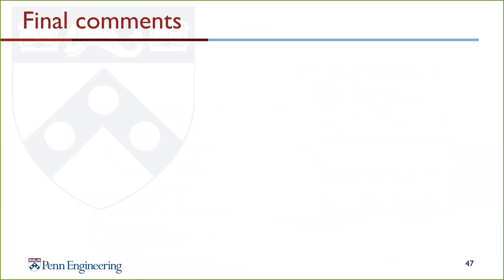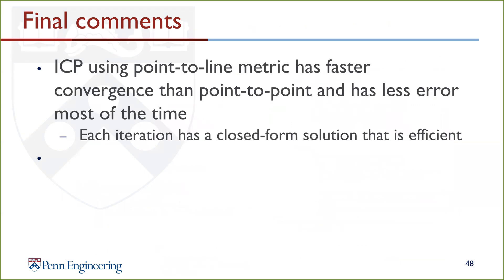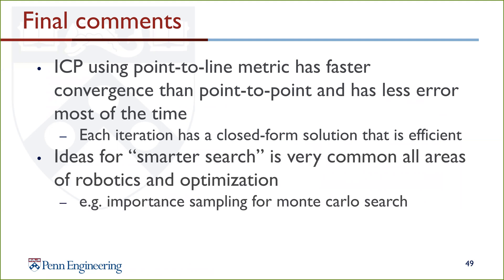Over the last two lectures, we've discussed the localization problem and gone over scan matching as one approach, focusing on the iterative closest point algorithm using the point-to-line metric. We showed why the point-to-line metric results in faster convergence and less error compared to point-to-point, derived the closed-form solution for each iteration, and covered heuristics for a more efficient correspondence search. This approach of devising a smarter search is common across robotics and optimization — for example, importance sampling for multimodal search has a similar flavor.